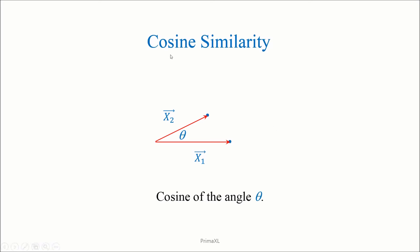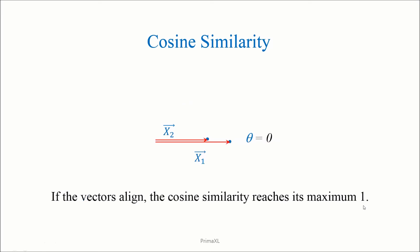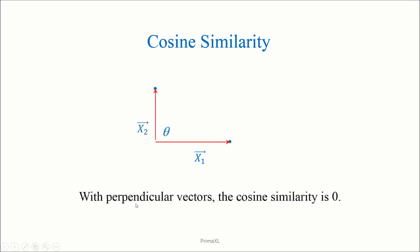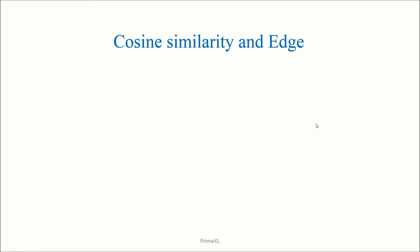The cosine similarity is the cosine of the angle theta between the vectors x1 and x2. What is interesting is that even when the length of the vectors increase, the angle theta remains the same and the cosine similarity also remains the same. The cosine similarity has its maximum value of 1 when the vectors align, is 0 when the vectors are perpendicular to each other, and has its minimum value of minus 1 when the vectors anti-align. So the cosine similarity can be any value between minus 1 and plus 1.